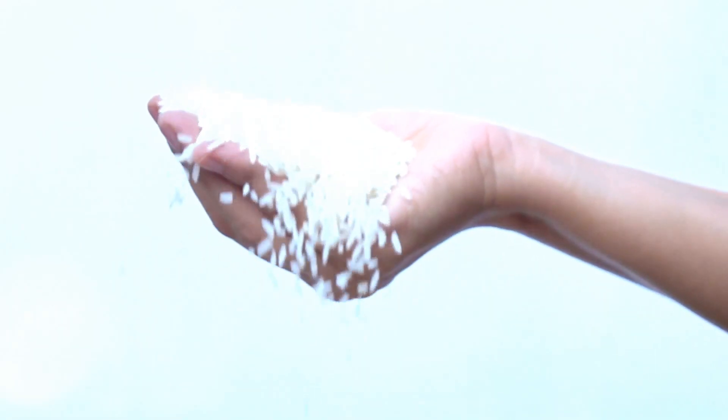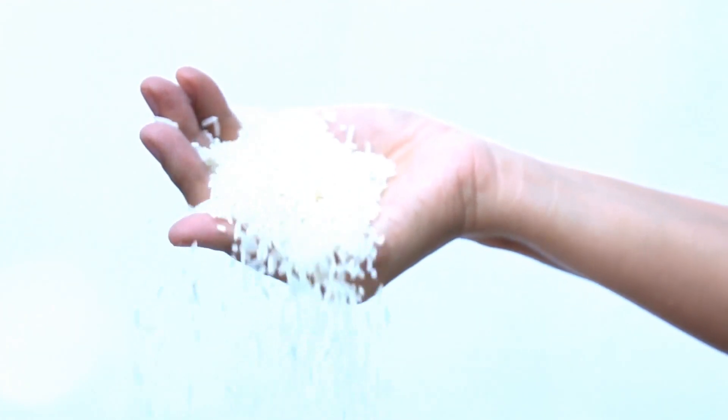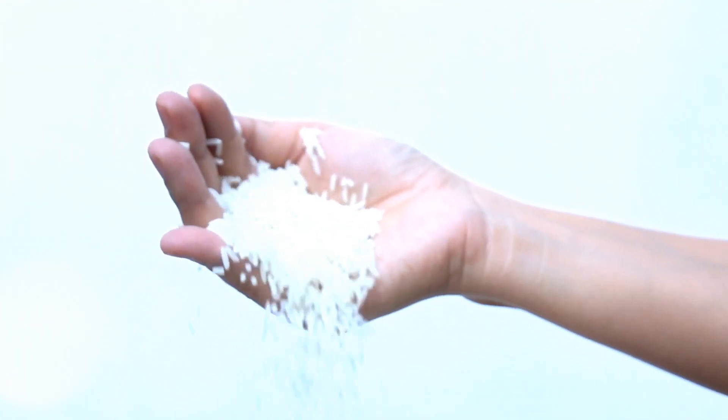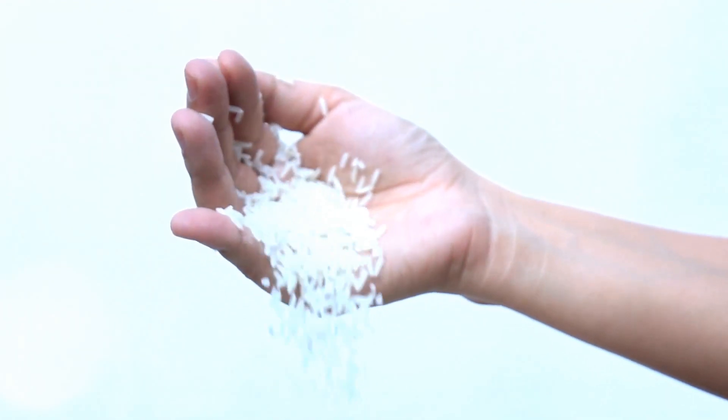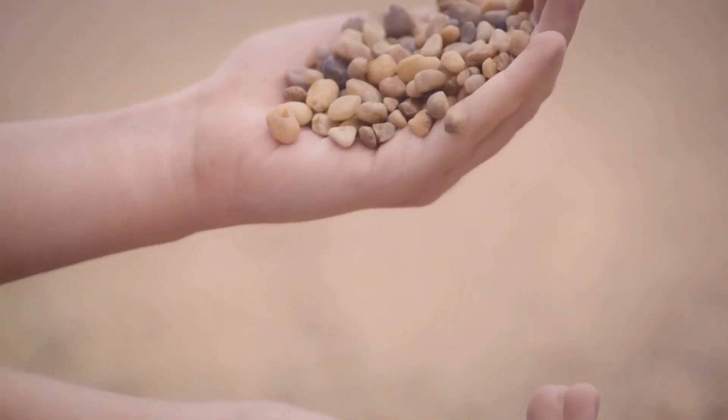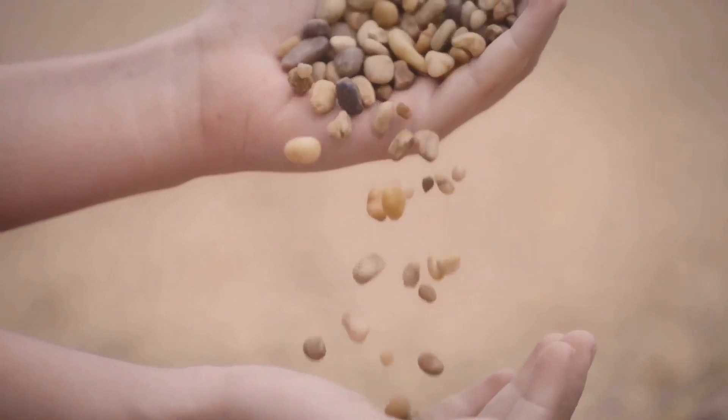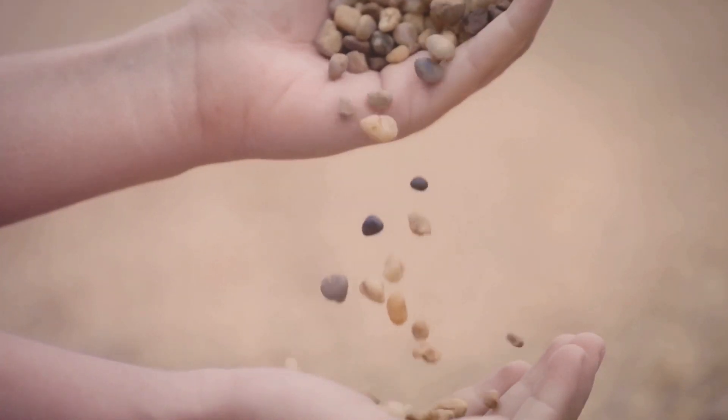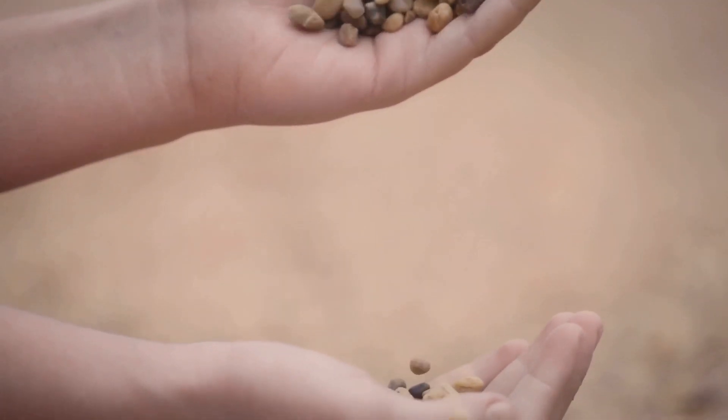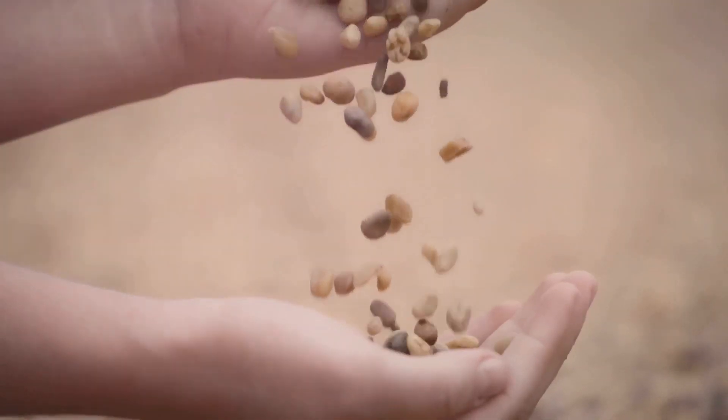At its most basic, the second law of infodynamics is all about entropy. Now, entropy might sound like a complicated term, but it's really just a fancy way of talking about disorder. Picture a pile of sand. Each grain is in a random place, right? That's high entropy. But if you could somehow arrange each grain perfectly, that would be low entropy.